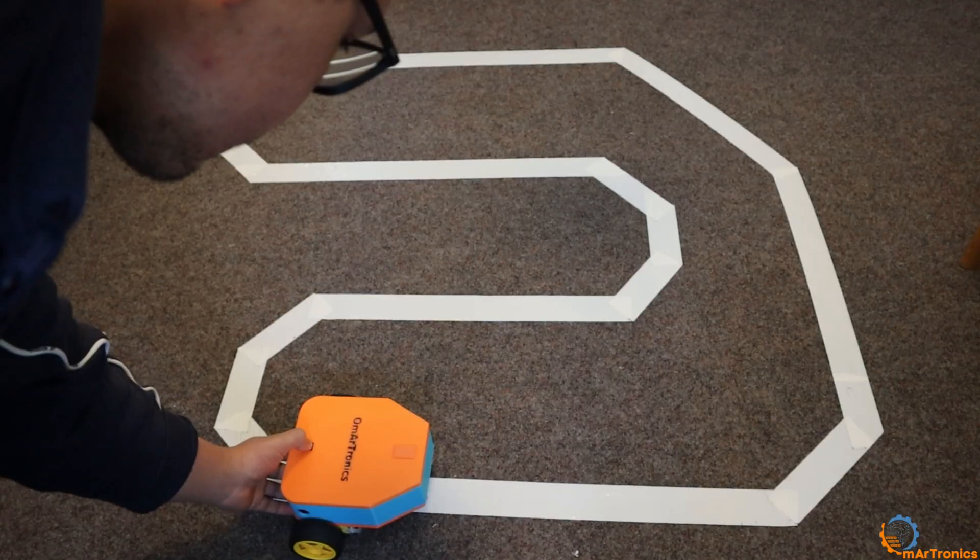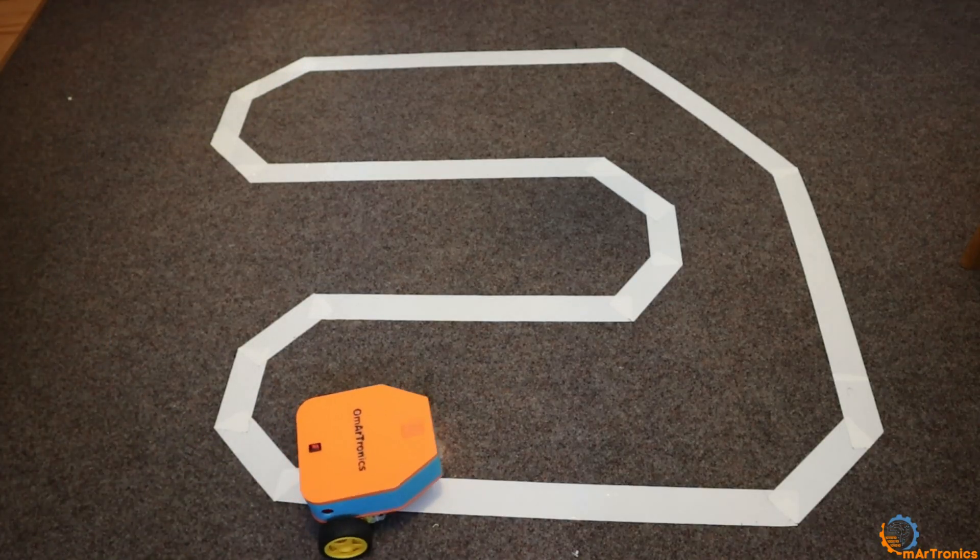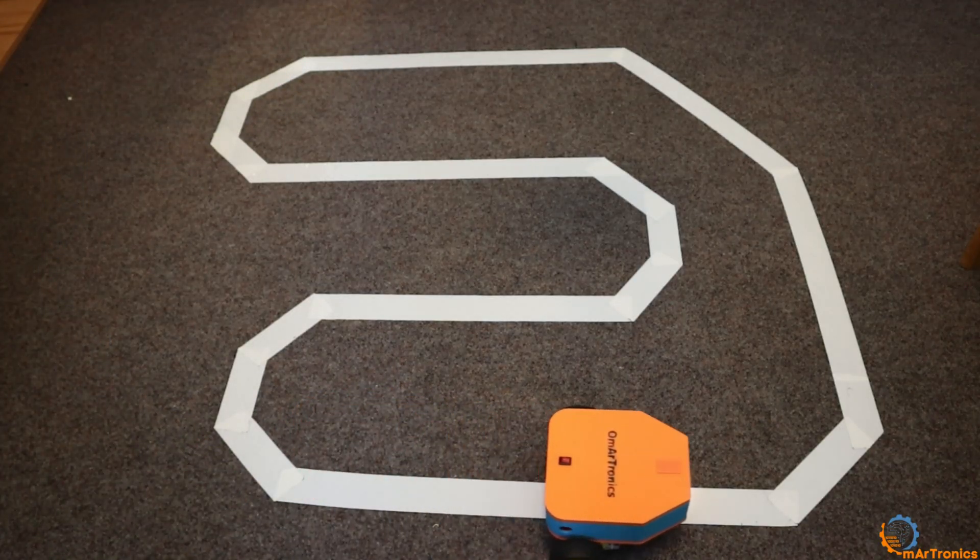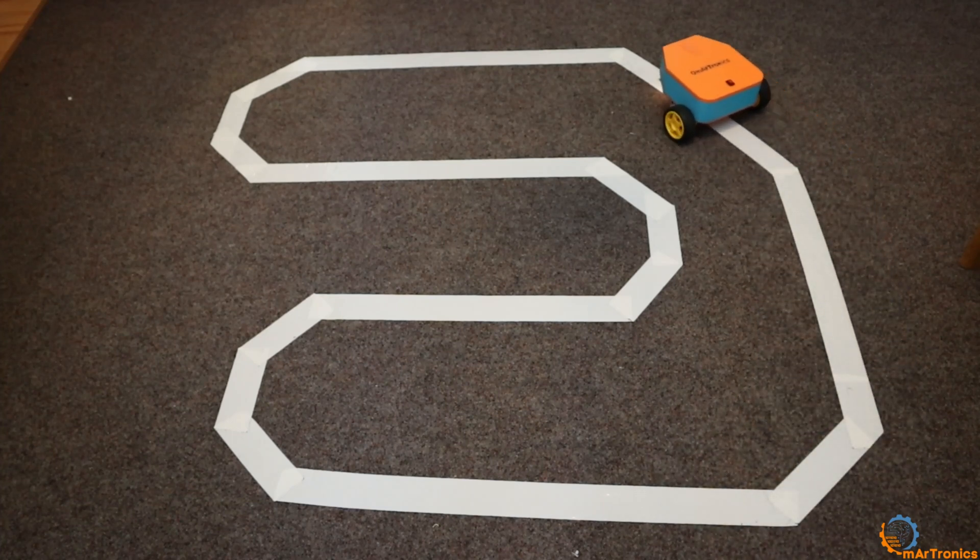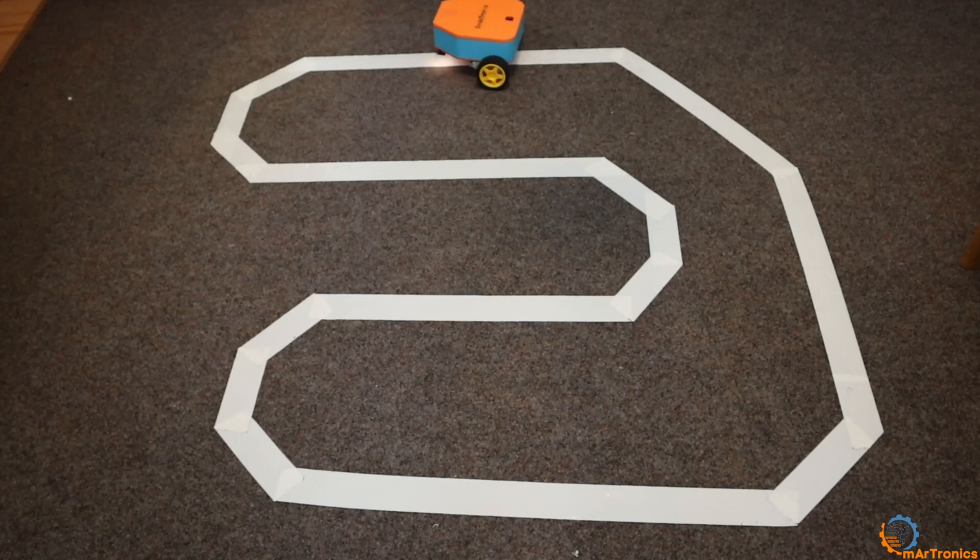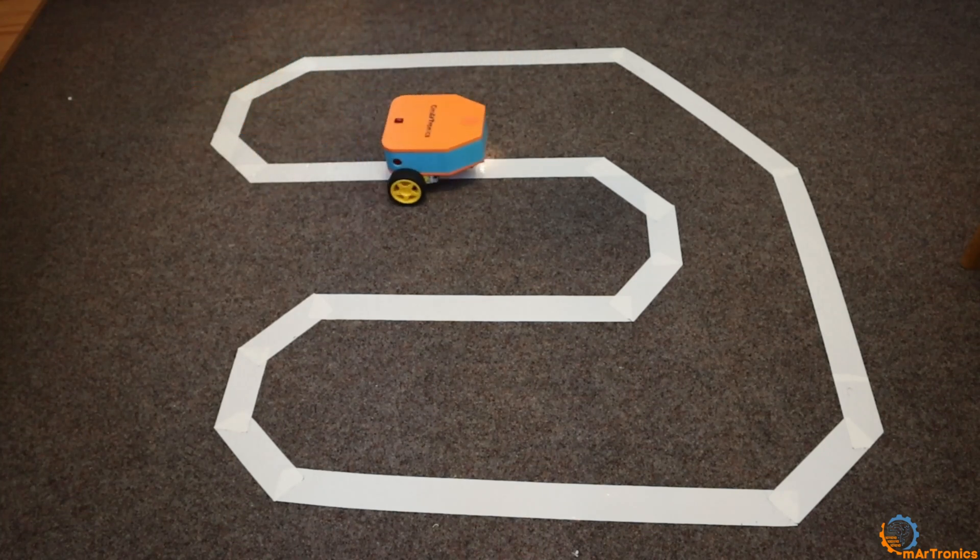After finishing explaining the code, I uploaded it to the Arduino board, then conducted a test, placing the robot on the edge of the white line. I also changed the parameters of the PID control until I found the appropriate ones. As you can see, the result is as follows.